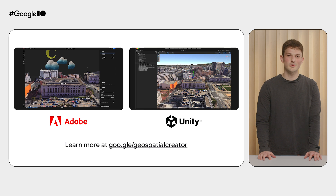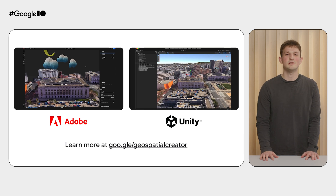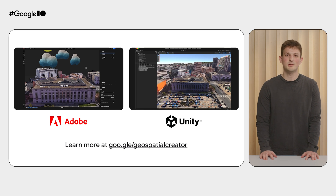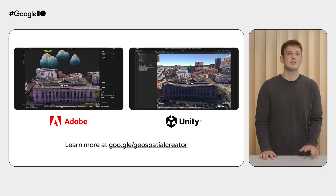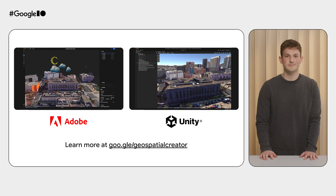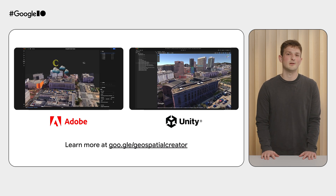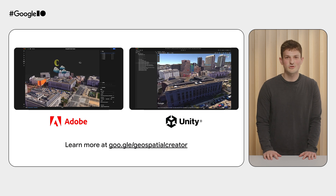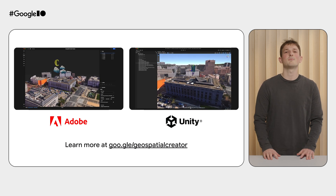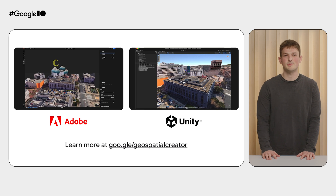Thanks, Jenny. To get started, you can use Geospatial Creator in either Adobe Aero or Unity. For Adobe Aero, make sure you install Adobe Aero and sign up with an Adobe Creative Cloud account. For Unity, make sure you have installed the latest AR Core extensions for Unity and Unity's AR Foundation framework. Once you've got your tools set up, you can start building geospatial AR content. For more information, visit our website to learn about our resources for building with Geospatial Creator.